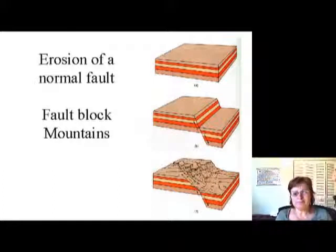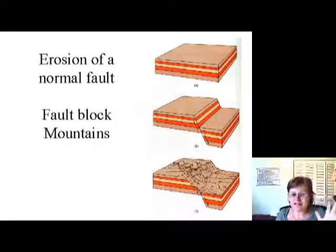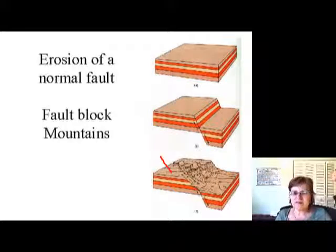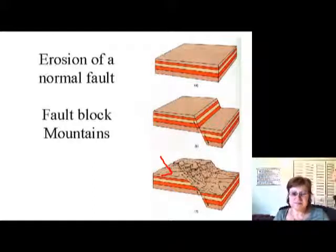You don't necessarily have to deal with the foot wall and hanging wall — if you realize a layer is missing, just check what's happening on the hanging wall side. If there is a missing part of that layer, you know it's a normal fault. This slide shows that when a normal fault happens, on one side you'll have a mountain and on the other side a valley, showing how weathering happens on a normal fault.